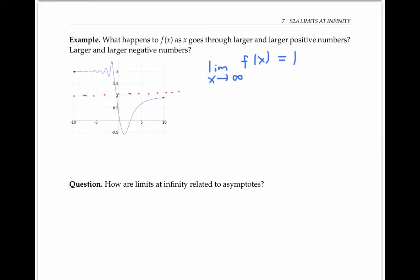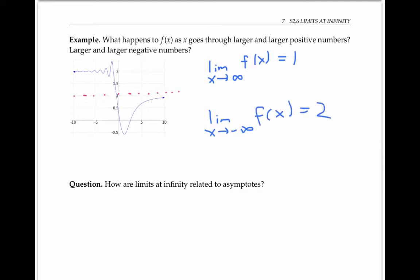Now what about when x goes through larger and larger negative values, like negative five, negative ten, negative a million, and so on? Assuming this trend continues, it looks like f of x, even though it's oscillating, is settling down at a value of two. So we write that the limit as x goes to negative infinity of f of x equals two. Here, x goes to negative infinity means that x is going through negative numbers that are larger and larger in magnitude.